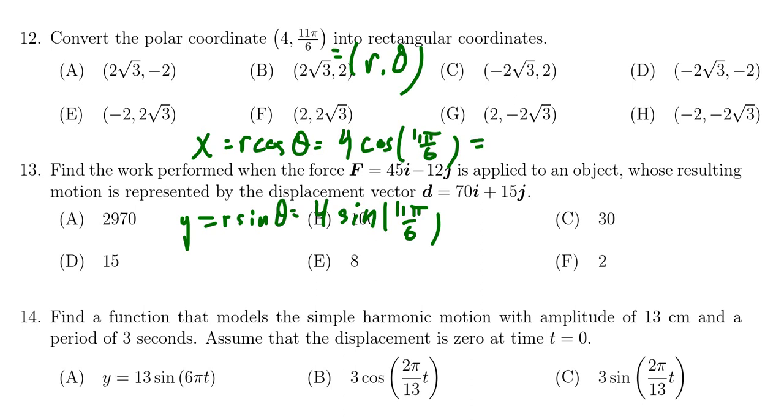Cosine will be positive so we get 4 cosine of π sixth. π sixth is the same thing as 30 degrees, but in the fourth quadrant sine would be negative, so we get negative 4 sine of π sixth.